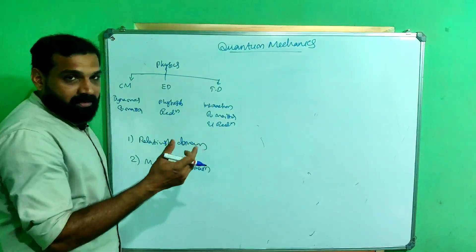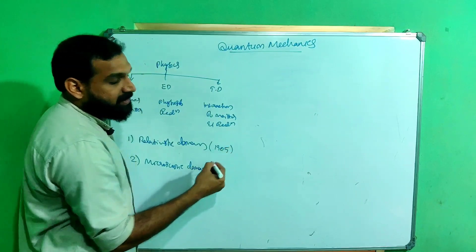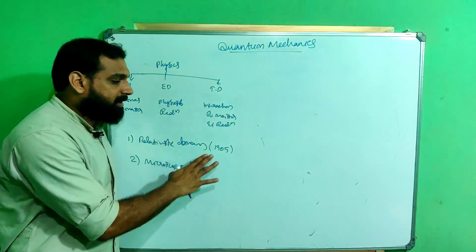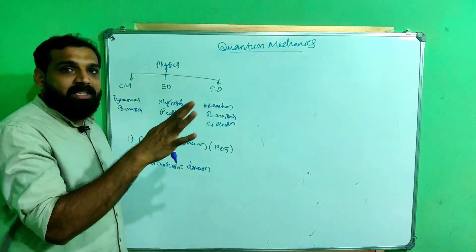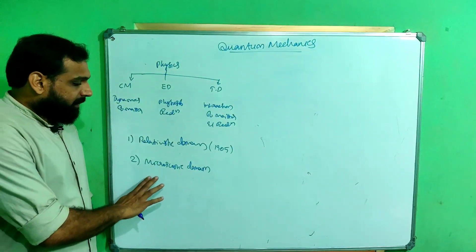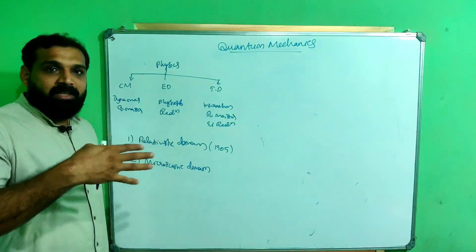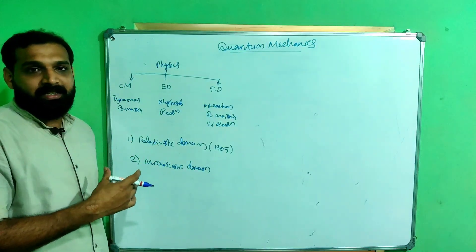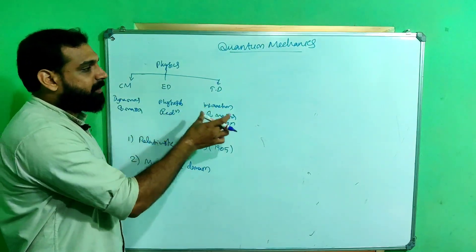You know that in the relativistic domain, when Einstein in 1905 proposed the special theory of relativity, he told that Newtonian mechanics is not valid at relativistic speeds. That was one problem. And later on, with the advancement of technology, the microscopic world was uncovered, and phenomena at the microscopic level could not be explained using classical mechanics, electromagnetic theory, or thermodynamics.